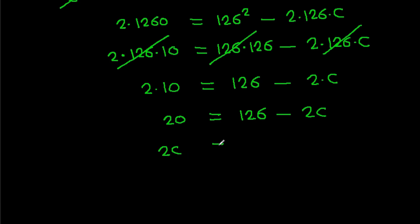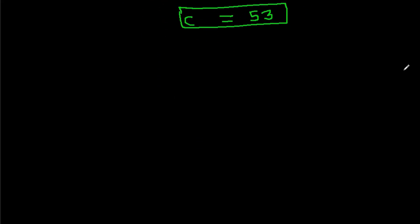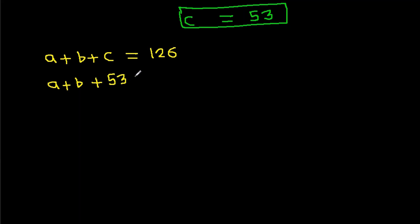So 2C equals 106 and C equals 106 divided by 2, giving C equals 53. Now from equation 1, A plus B plus C equals 126, and with C equals 53, we get A plus B equals 126 minus 53, so A plus B equals 73.